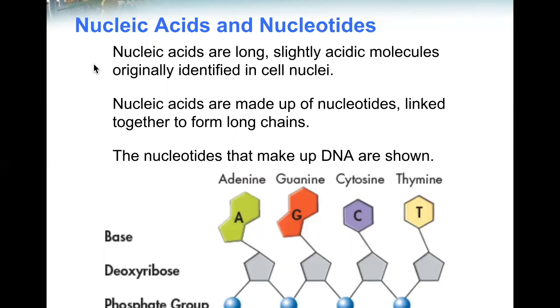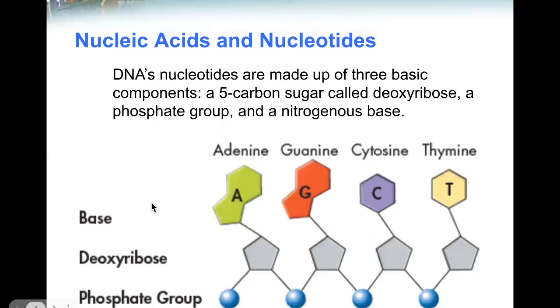Nucleic acids are long, slightly acidic molecules originally identified in cell nuclei. Nucleic acids are made up of nucleotides linked together to form long chains. The nucleotides that make up DNA are shown below: adenine, guanine, cytosine, and thymine. Each of these have a base, a deoxyribose carbon chain, and a phosphate group. DNA's nucleotides are made up of three basic components: a five-carbon sugar called deoxyribose, a phosphate group, and a nitrogenous base.